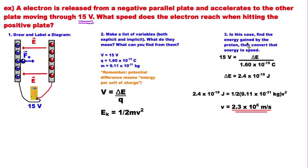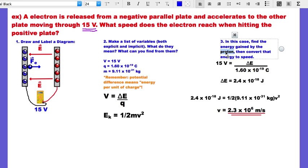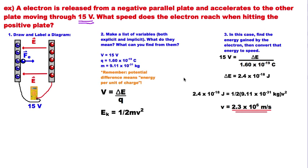So the energy gained by the electron is going to change into kinetic energy, into speed. I put in my 15 volts, I put in my charge, get my energy gained by this particle. Then I can substitute that energy in for EK and then solve for the speed. I'm getting a speed of 2.3 times 10 to the positive 6 meters per second.